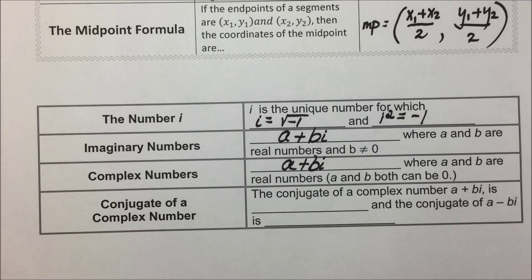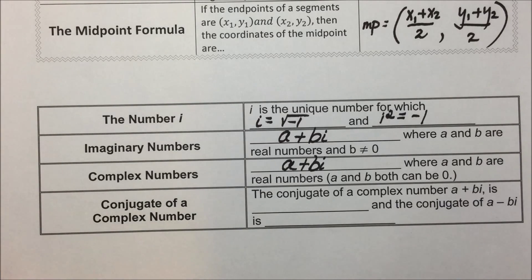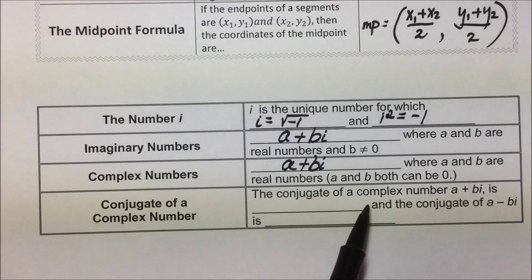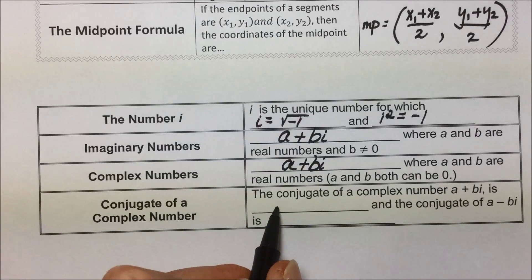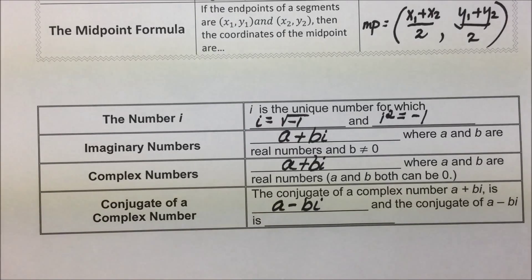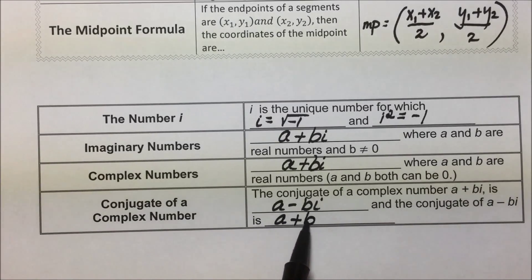Section 7.8: Conjugates and Division of Complex Numbers. A conjugate is a two-term expression that has the same first and second terms with opposite signs. We're going to use conjugates of complex numbers defined in a similar manner to help us deal with division. The conjugate of a complex number a plus bi is a minus bi, and the conjugate of a minus bi is a plus bi.